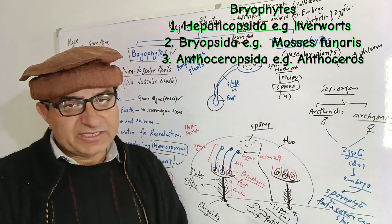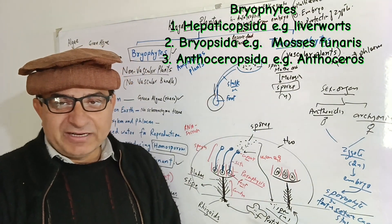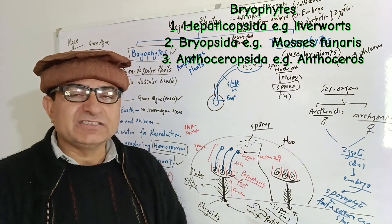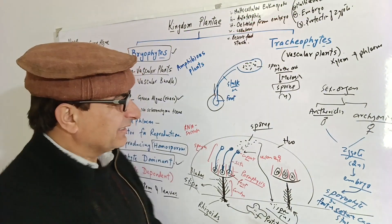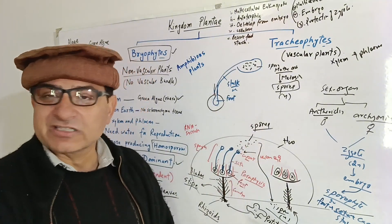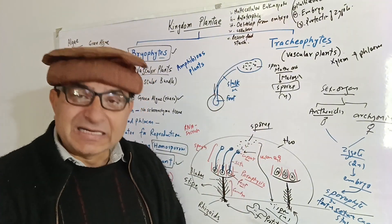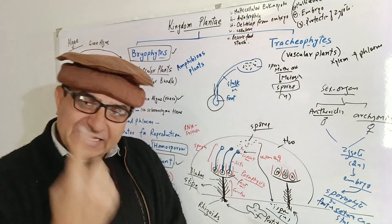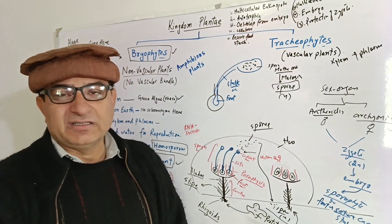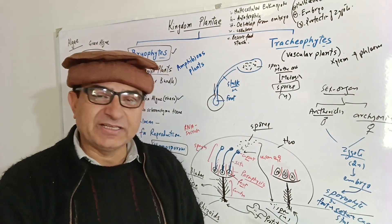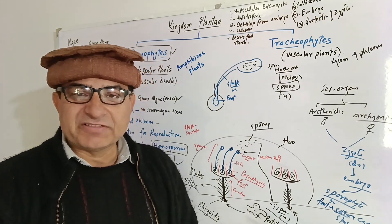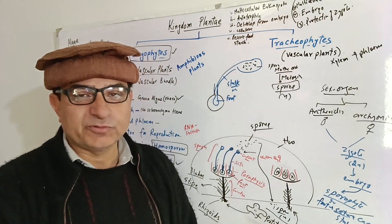In one group — the Anthoceros group — the sporophyte is a little bit advanced because it starts getting photosynthetic ability, so photosynthesis ability also comes in this group. This is the life cycle of bryophytes.